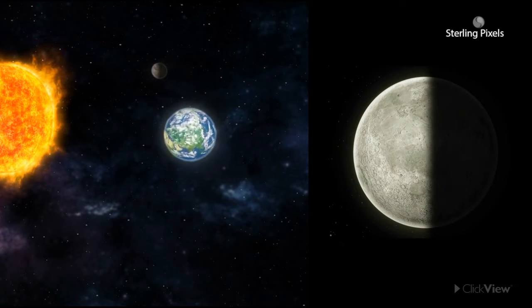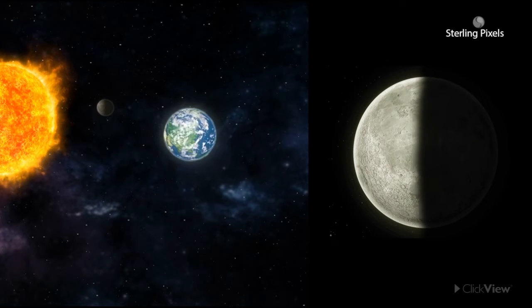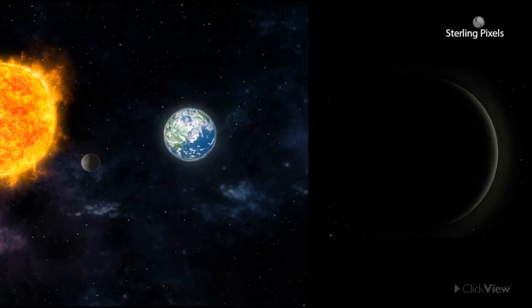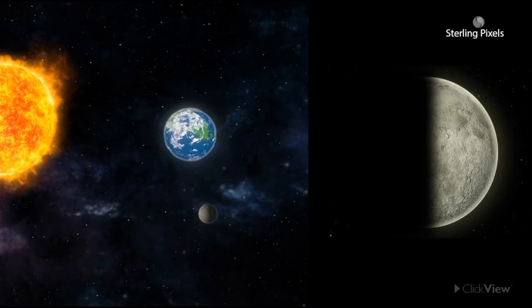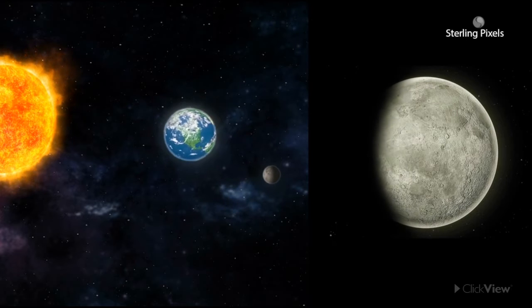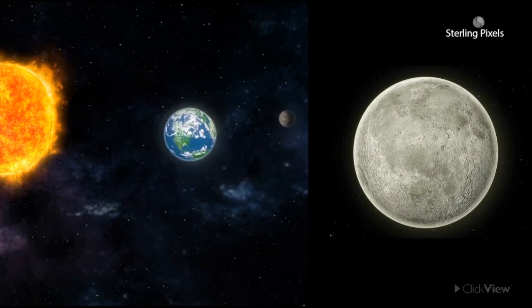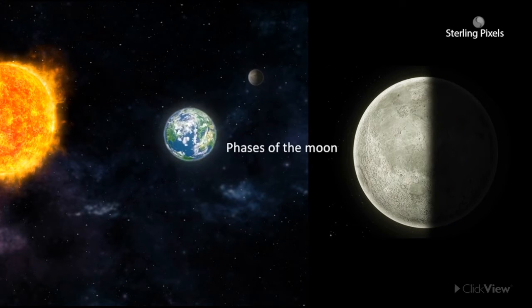As the moon circles the Earth, we can only see a part of its illuminated portion from the Earth. The portion of the lit side we see changes. These changes are known as the Phases of the Moon.